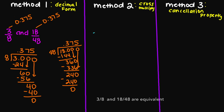So let's try method number two — I'm going to cross multiply. 3 times 48 is going to equal 144. And then 8 times 18 — this is also going to equal 144. 144 equals 144. So we know yes, these two fractions are indeed equivalent.